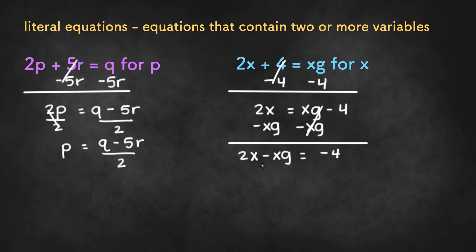The question is, how do we isolate the X from here? We can do the reverse of the distributive property. And we can take out the X and put the rest of the things in parentheses. So, 2X divided by X is 2, and negative XG divided by X is negative G equals negative 4.